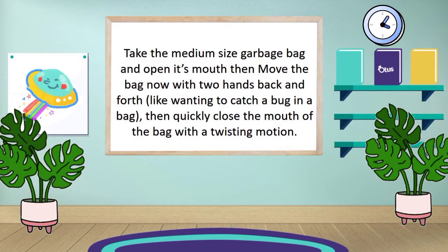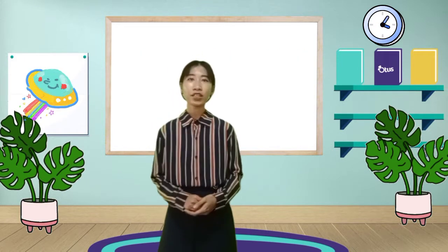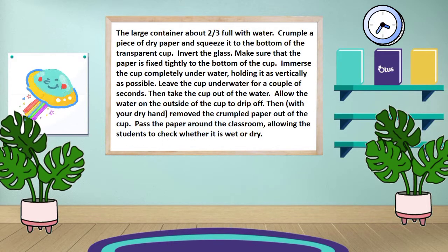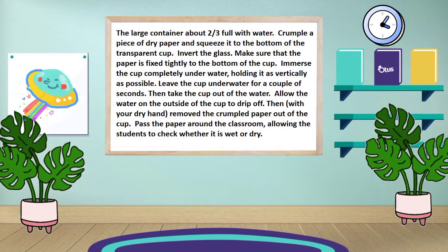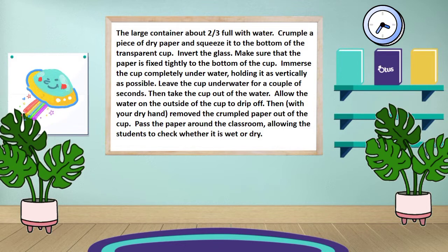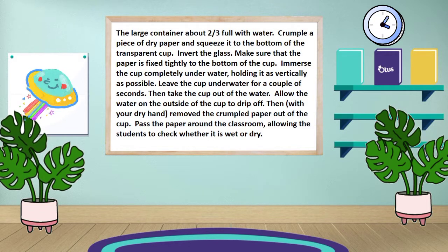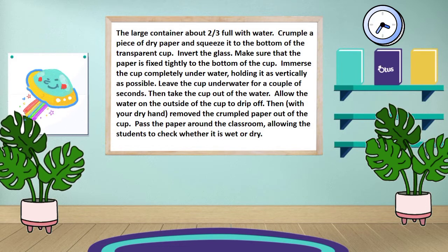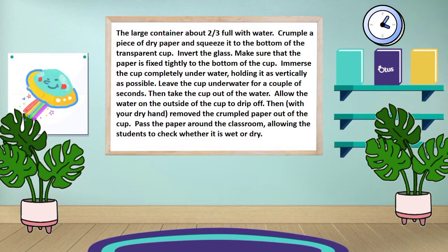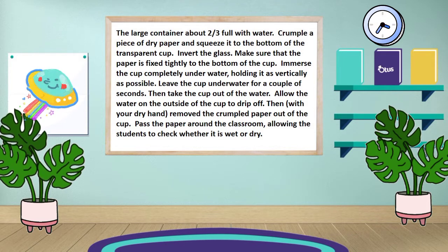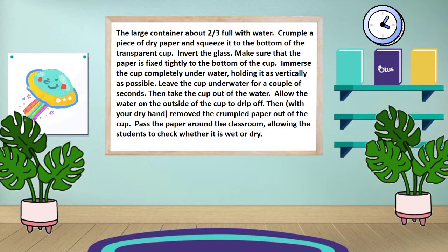Then quickly close the mouth of the bag with a twisting motion. While group two: fill the large container about two-thirds full with water, crumple a piece of dry paper and squeeze it to the bottom of the transparent cup. Invert the glass — make sure that the paper is fixed tightly to the bottom of the cup. Immerse the cup completely underwater, holding it as vertically as possible. Leave the cup underwater for a couple of seconds. Then take the cup out of the water, allow the water on the outside of the cup to drip off, then with your dry hand remove the crumpled paper out of the cup.